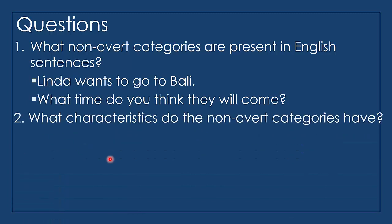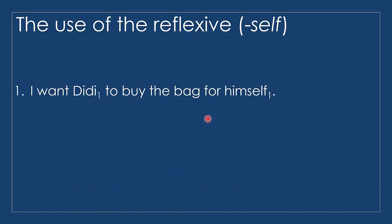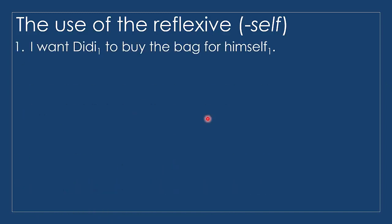The second question is: what characteristics do the non-overt categories have? Now let me answer the questions by using the reflexive 'self.' We have the sentence: 'I want you to bind the bag for himself.' Here we have 'himself,' and we understand that Duty here is a male.